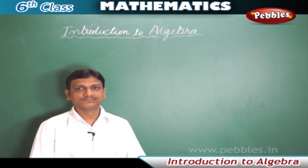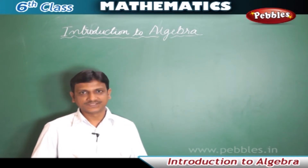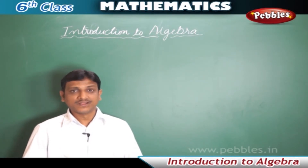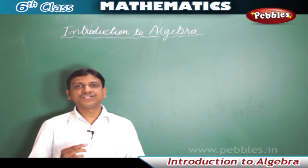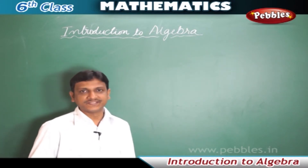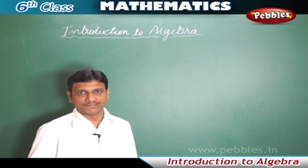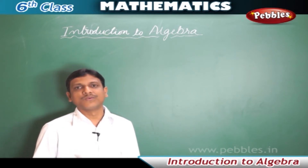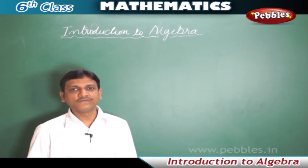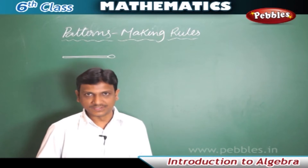Introduction to algebra. So far we have learned about numbers and geometrical shapes, which come under arithmetic and geometry. Now we are going to learn a new branch of mathematics called algebra. The main feature of algebra is the use of letters or alphabets to represent numbers. A letter may stand for an unknown quantity. By learning the method of determining unknowns, we develop powerful tools to solve complicated puzzles and problems that arise in our daily life.